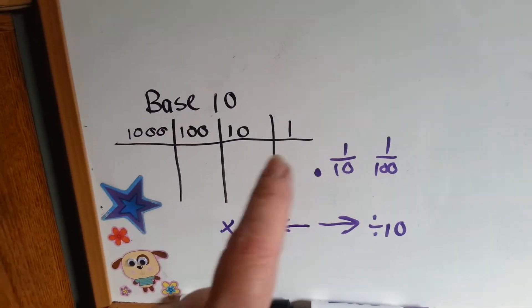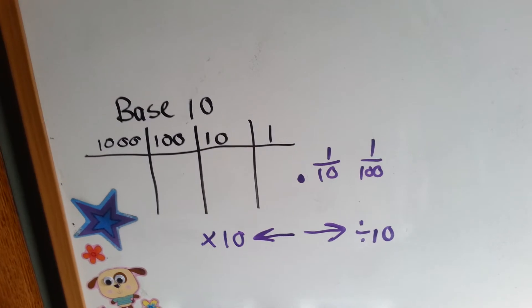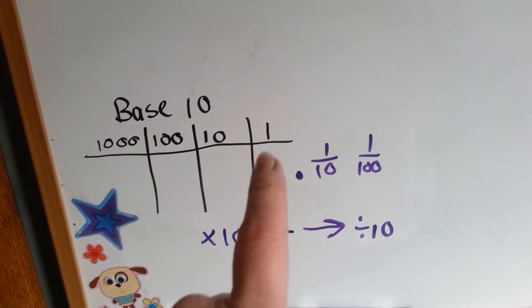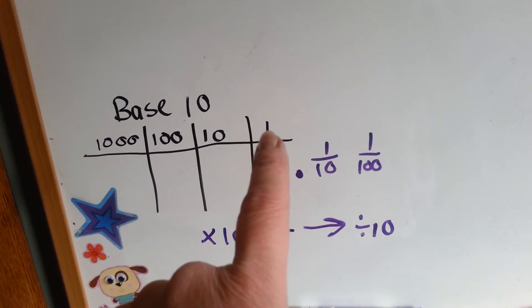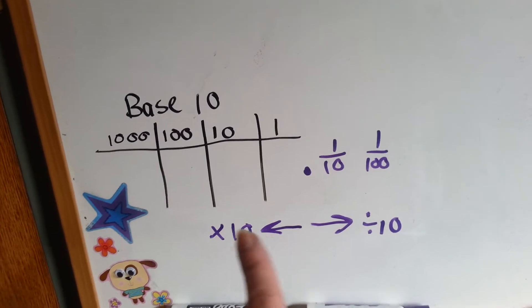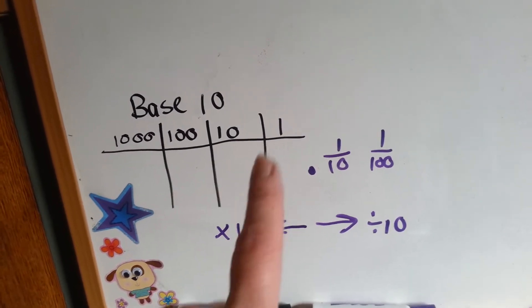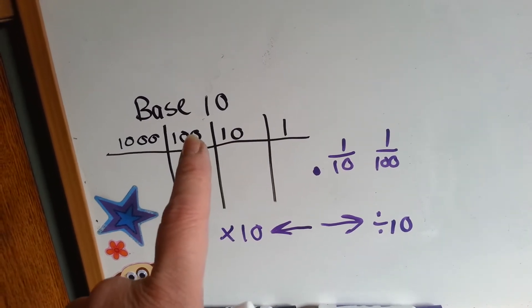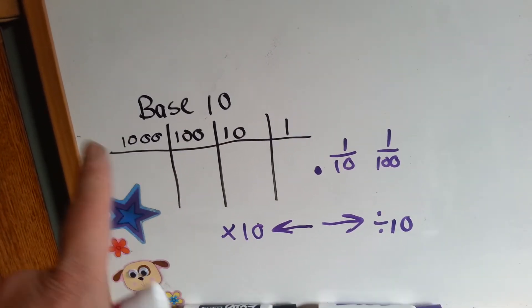In base 10, which is the place value system that we use every day, it's based on the number 10. Isn't that appropriate? In this column we have our ones, then we have our tens, our hundreds, and our thousands. As we move to the left, we multiply by 10 to get to the next column. 1 times 10 is 10, 10 times 10 is 100, 100 times 10 is 1000, etc.